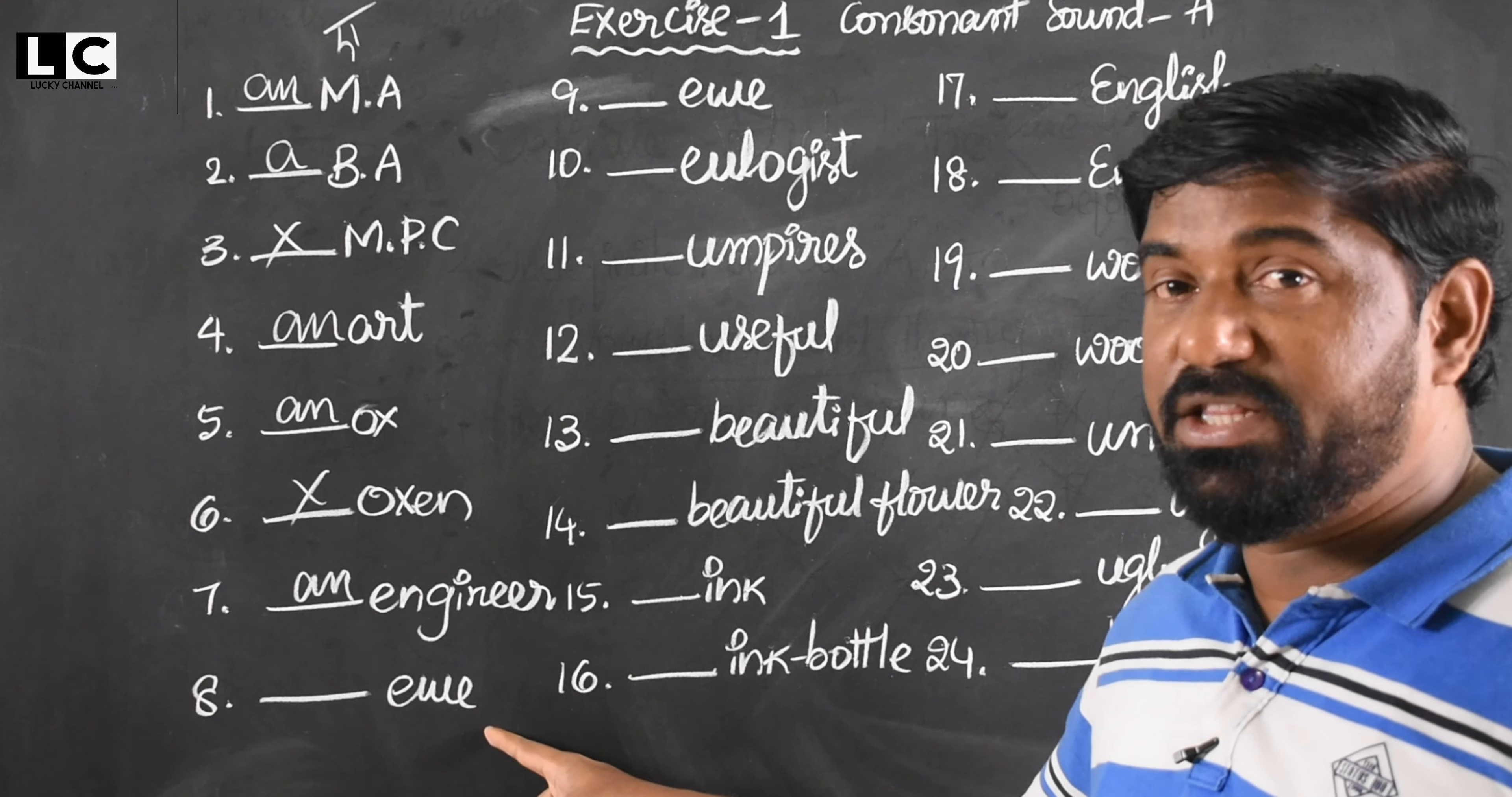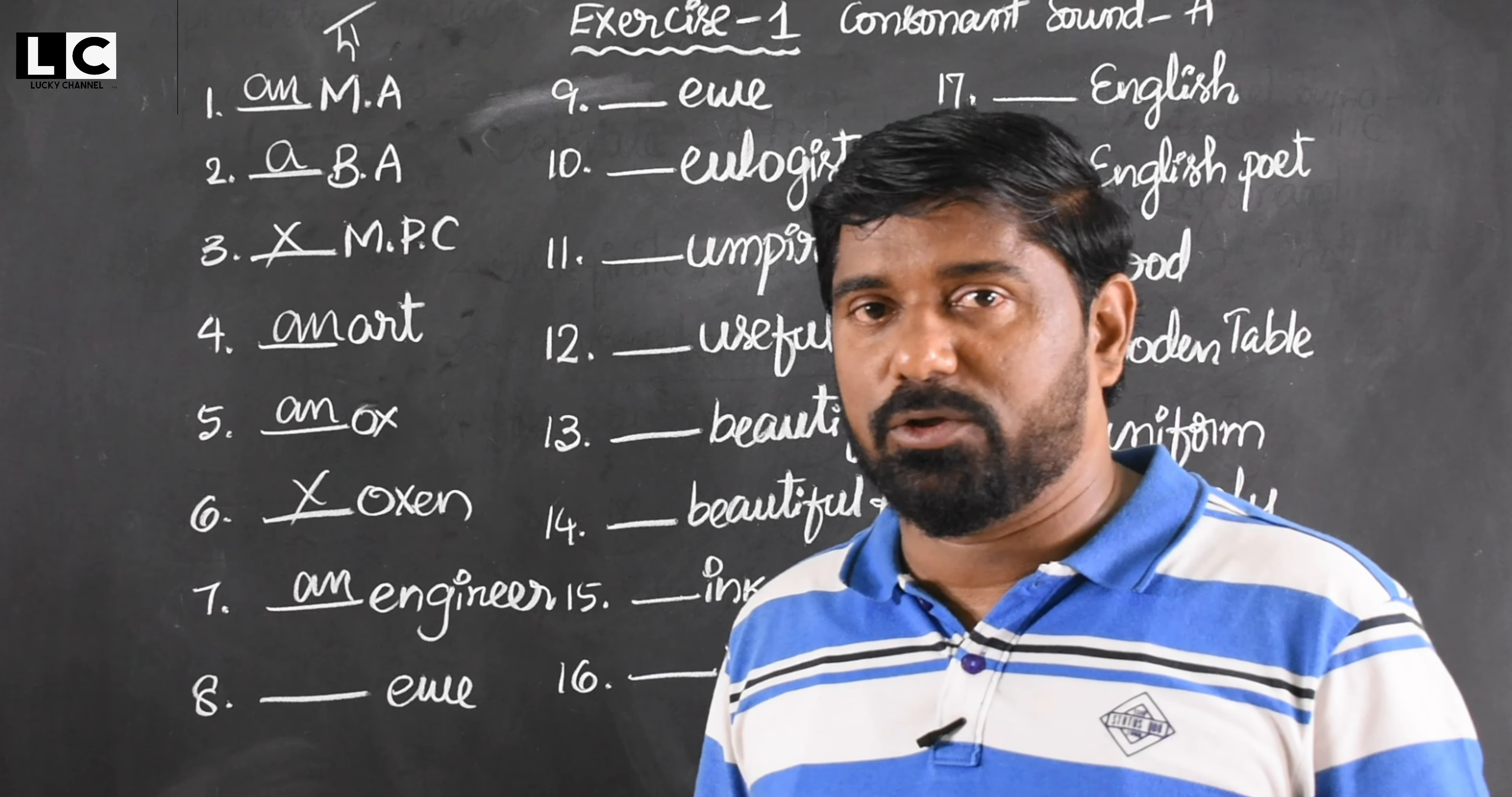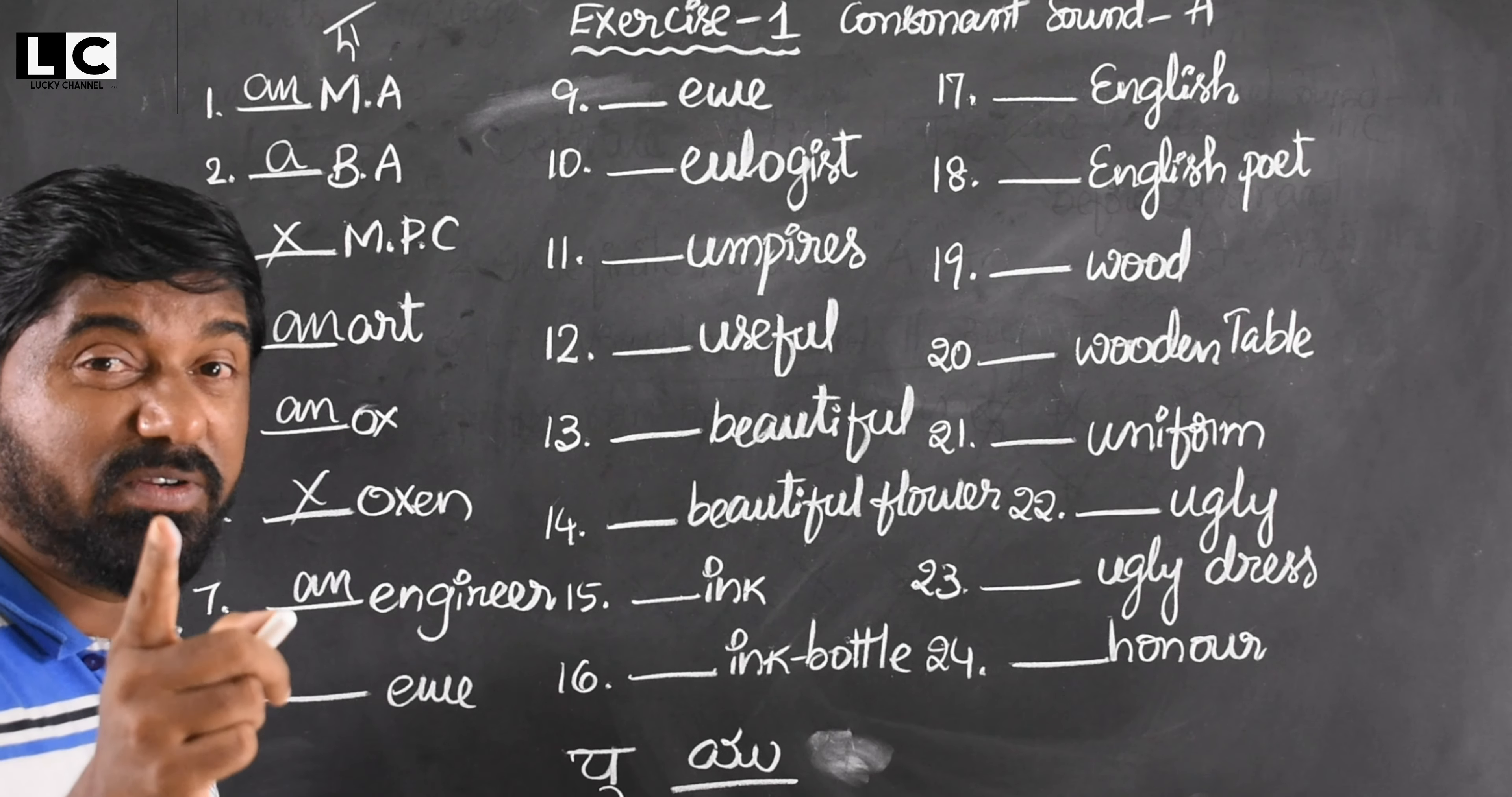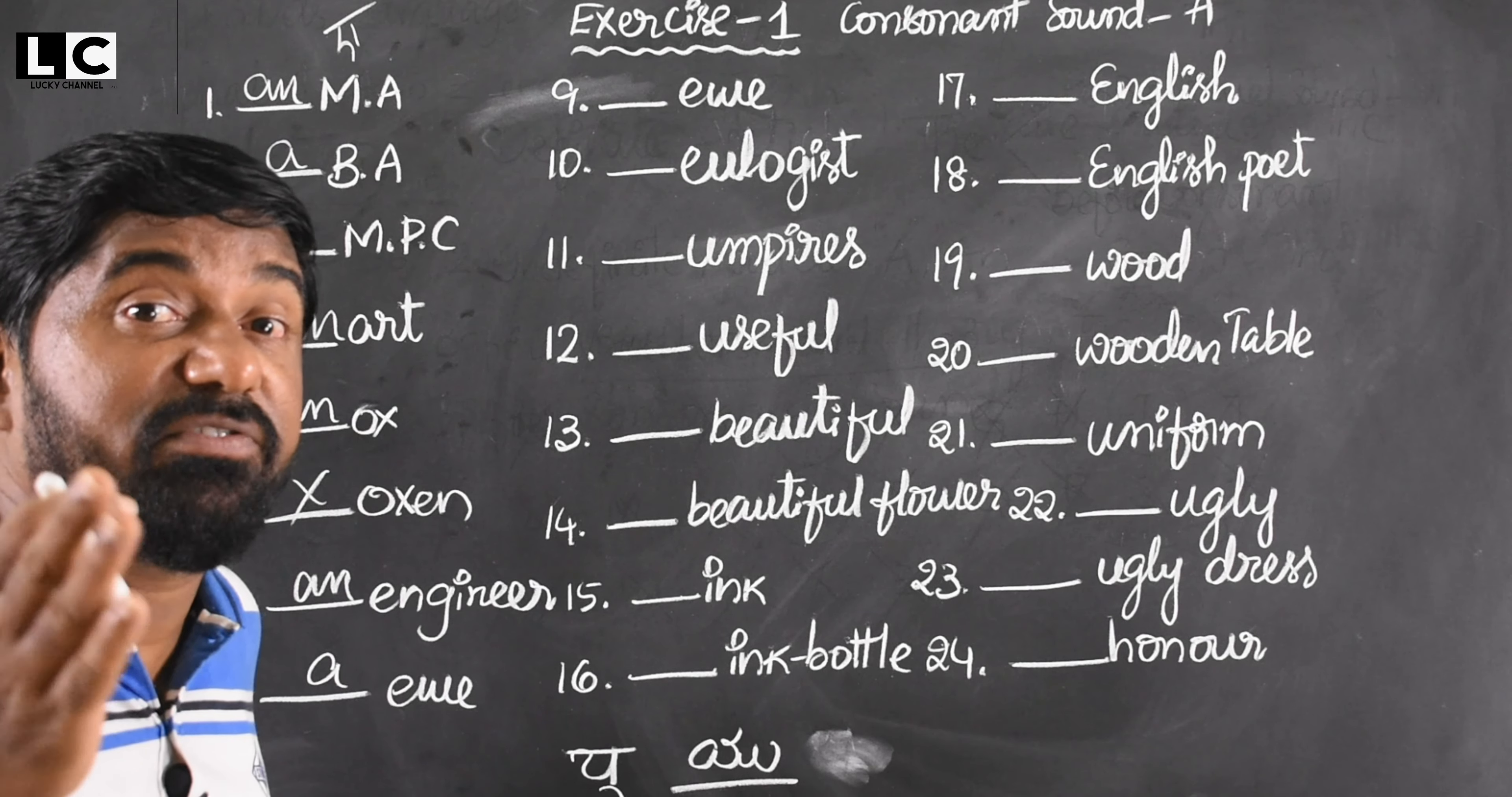Ewe - this is a very important word. Maximum people don't know this word because it's a rare word. The word starts with e, but pronunciation is yoo. That is called consonant sound - yoo. A strong female sheep. This word you can find in Webster's dictionary. Whenever a word has yoo sound, spelling doesn't matter, pronunciation is the matter. Yoo is consonant, so article is a ewe.